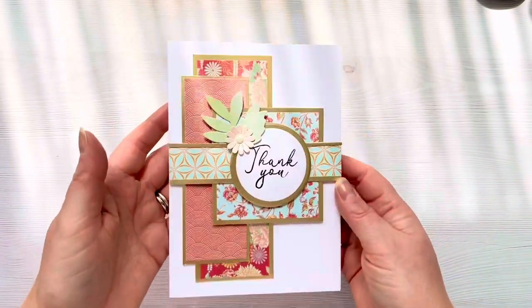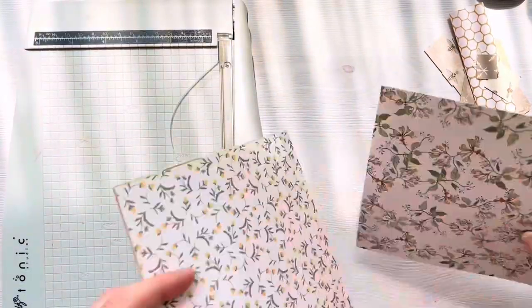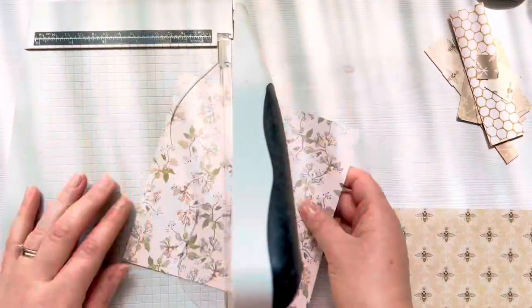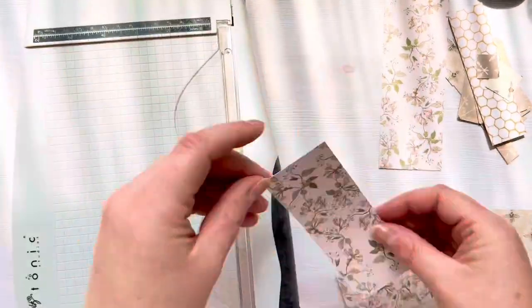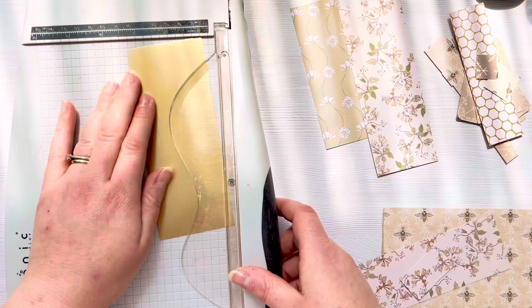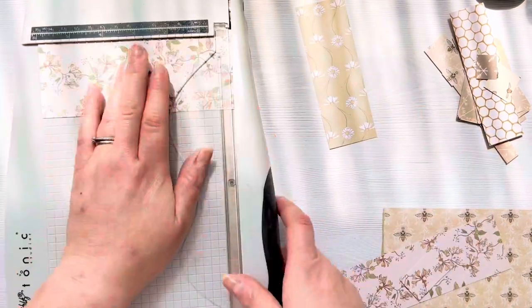We're now going to repeat the process but using some different pattern paper. Again, the measurements this time are not going to be the same because I'm just using what I've got and in this case, I'm actually going to have to use a whole sheet. I've only got a few of those sheets left so we're going to cut that down.